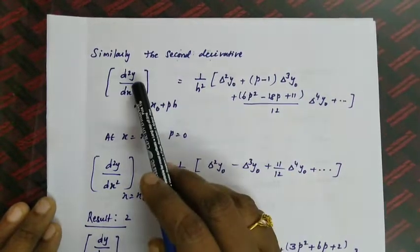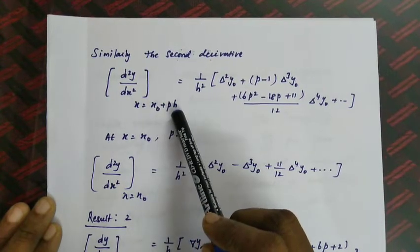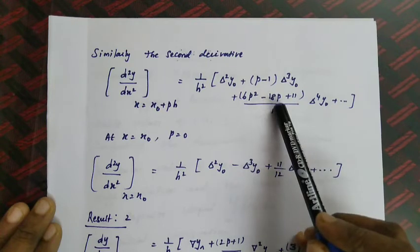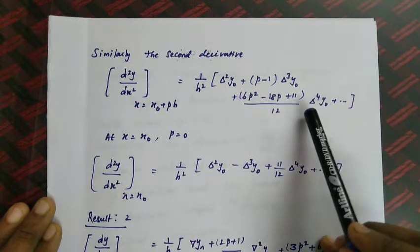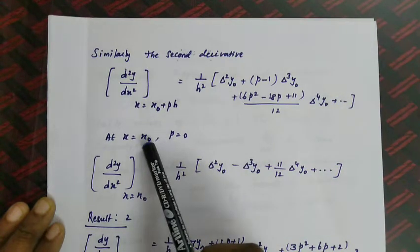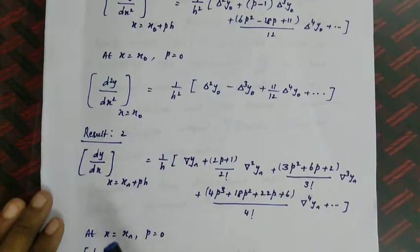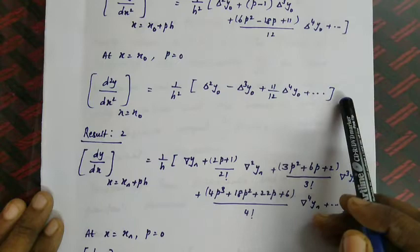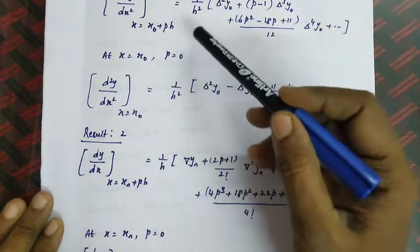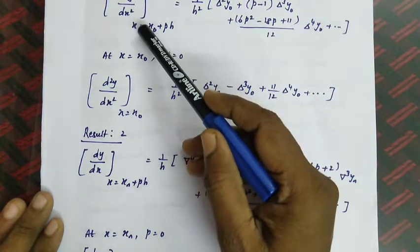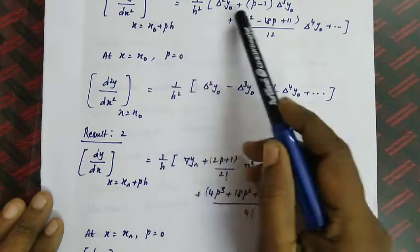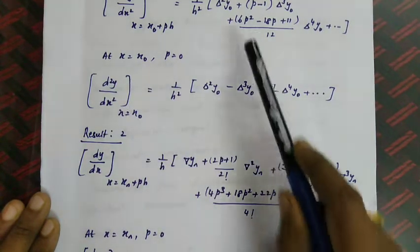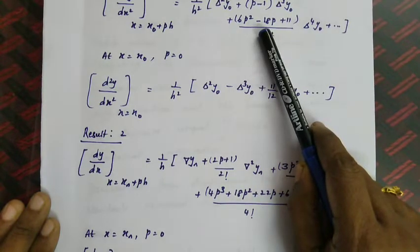Similarly, the second derivative d²y/dx² at x = x₀ + ph equals: (1/h²)[Δ²y₀ + (p−1)Δ³y₀ + (6p²−18p+11)/12 · Δ⁴y₀ + ...]. At x = x₀ where p = 0, this simplifies to: (1/h²)[Δ²y₀ − Δ³y₀ + (11/12)Δ⁴y₀ + ...]. These two results are used for finding the second derivative from the forward difference table.